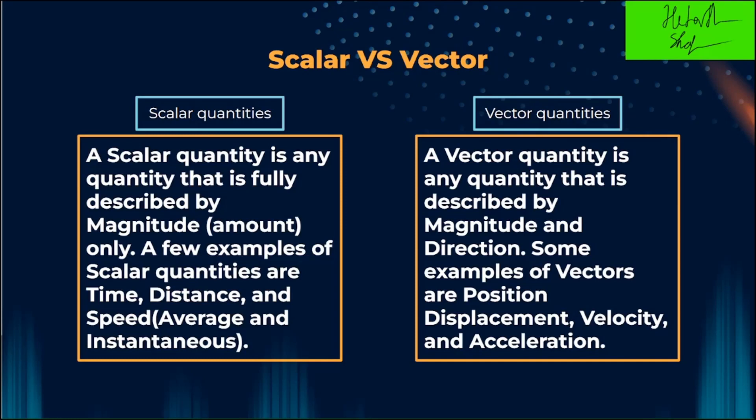A vector quantity is any quantity that is described by both magnitude and direction. Some examples of vectors are position, displacement, velocity, and acceleration.